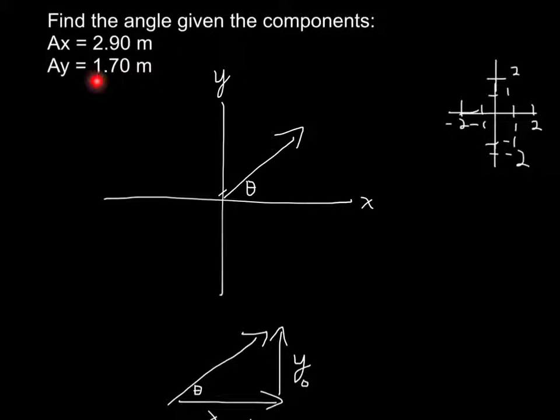And the Y axis is 1.7. So it's positive right here. So the X component is here. The Y component is here. So that means the vector has to be in the first quadrant.